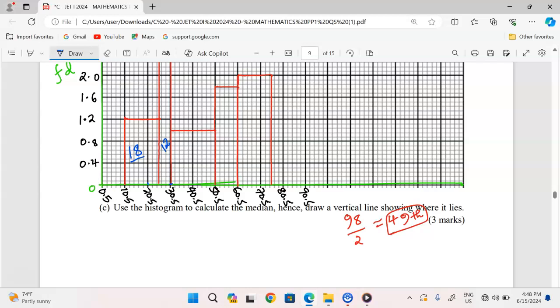But we want the first 49 students, which means we need 19 more students. Students are represented by area, so we need area in the third bar which will give us 19 students. The height is fixed, so we can only vary the width of this class. When we consider all students in this class, they are 20, but we need the 49th, so we need area which will give us 19 students.